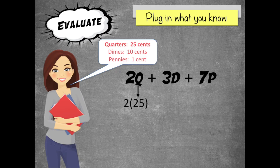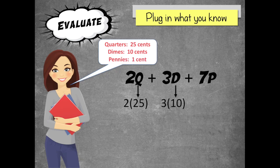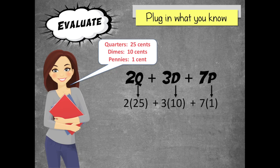Dimes are 10 cents so I write 10 instead of d. And pennies are 1 cent so I write 1 instead of p. And I want to bring down my plus signs so I don't forget them. Let's keep going.